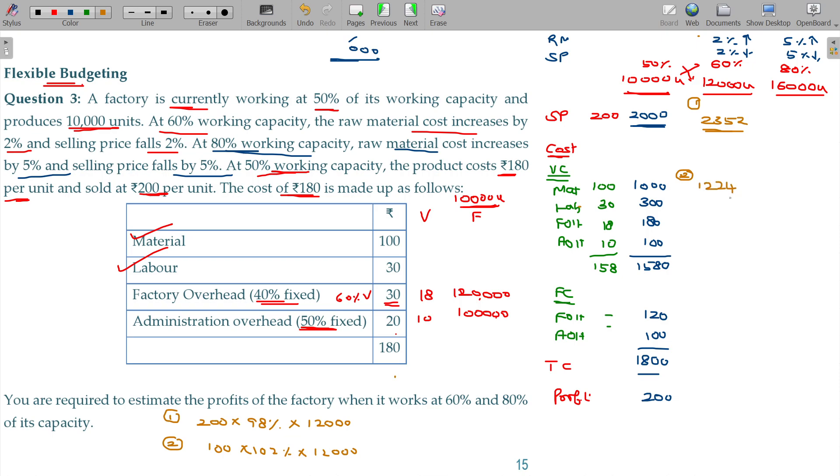1224, labour being 360, factory overhead 216, admin overhead 120, then the total being 1920. The ultimate total being 2140 and your profit here being 212.